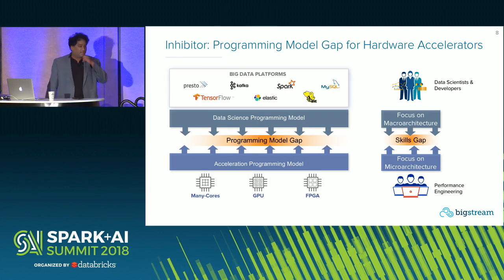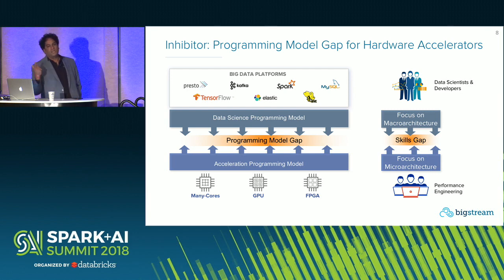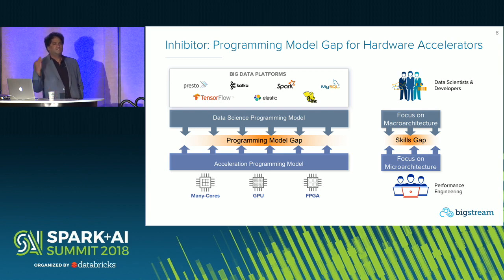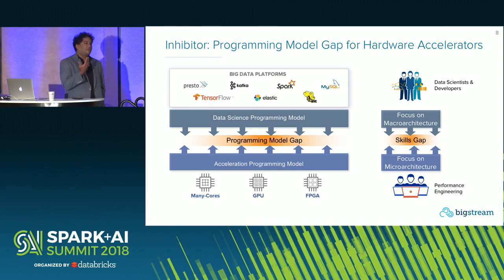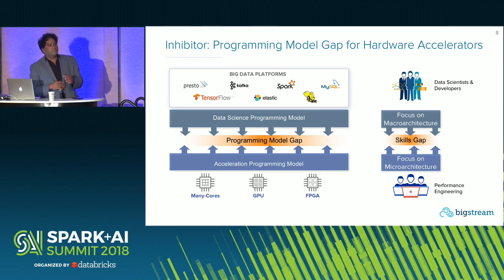Why don't we all just accelerate and everybody be happy? There's an inhibitor — at BigStream we think of it as a programming model gap. Data scientists, developers, quants — we like to think about our applications in a domain-specific way using high-level languages on big data platforms. We don't want to, and in my case couldn't, program an FPGA or GPU. The programming of that hardware is very complex. Larger organizations may have a performance engineering team that knows how to program that hardware, but they don't want to think about the application layer. This skills gap causes a lot of complexity and can slow your time to insight.